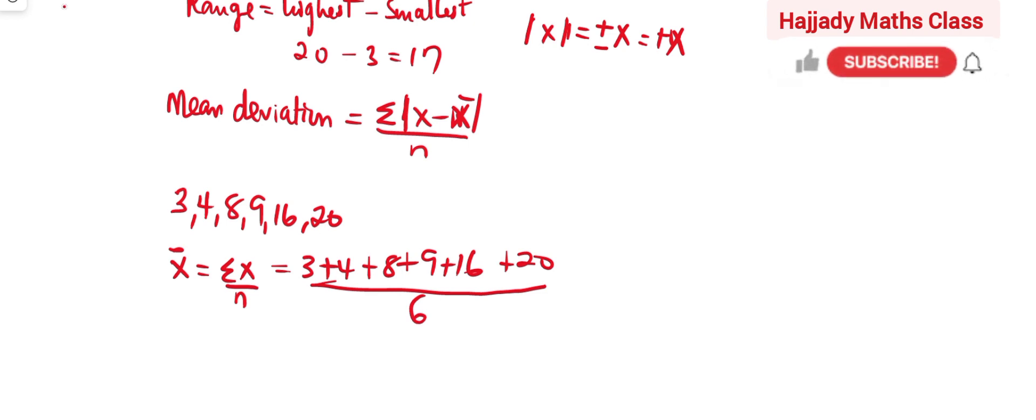So calculating the mean of this, we have our mean, which is the same thing as x̄, to be equal to 3 plus 4, 7 plus this, we have 15,